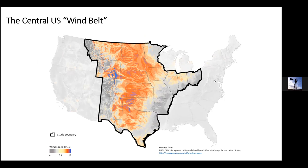The area we chose for the Site Wind Right assessment includes 17 states in the central part of the US — a region informally known as the wind belt. It has by far the highest and best raw wind resource potential on the continent, and encompasses about 80% of the existing and installed wind capacity in the United States.